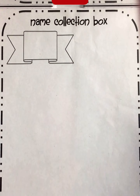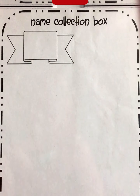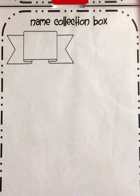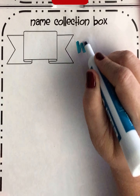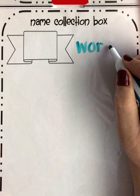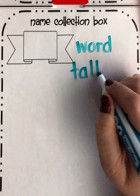So before we begin, let's talk about all the different ways that we can show a number. One way that we can show a number is by using the word — we can show a number by writing the actual word of that number. Another way that we can show that number is by using tallies.